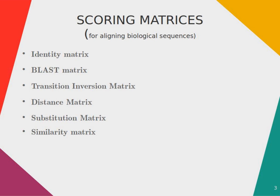Scoring matrices are used to assign a score to each comparison of a pair of characters. That is, scoring matrices tell how similar the amino acids or nucleotide sequences are. The scores in the matrix are integer values which assign a positive score to identical or similar character pairs and a negative value to dissimilar pairs. Scoring matrices are created based on biological evidence.